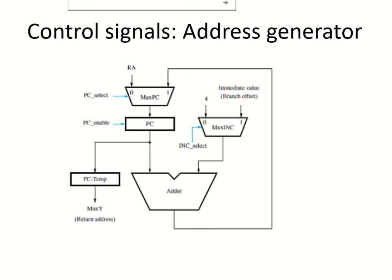In this lesson, we will discuss the control signals of the address generator. The contents of the PC have to be incremented by the length of the instruction. If we are assuming 4, it has to be incremented to point to the next instruction.